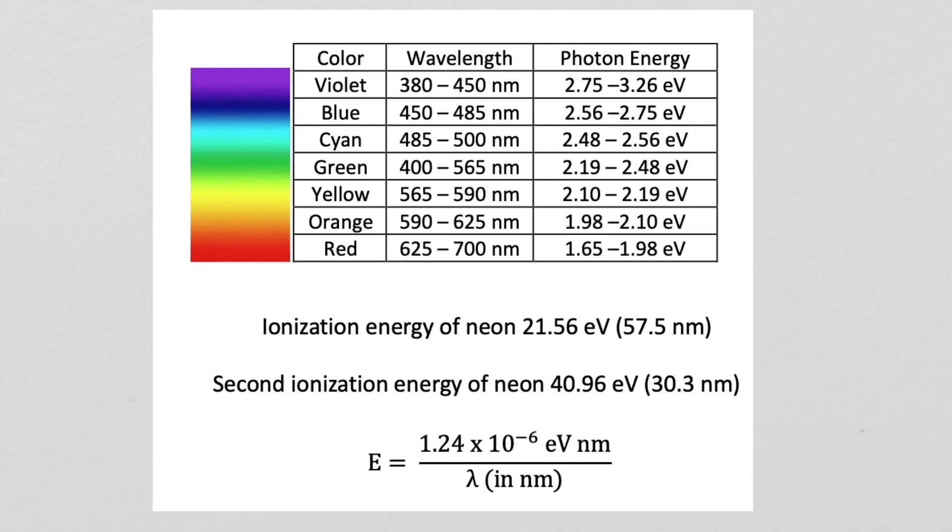The energy it takes to ionize a neon atom is 21.56 electron volts. The reverse process of a neon ion capturing an electron releases 21.56 electron volts in the form of a photon. That photon will have a wavelength of 57.5 nanometers, which is well outside the visible range. The light we see in those filaments is not coming from neon ions recapturing electrons. It is coming from interatomic transitions of electrons going from higher orbits to lower orbits in the neon ions.